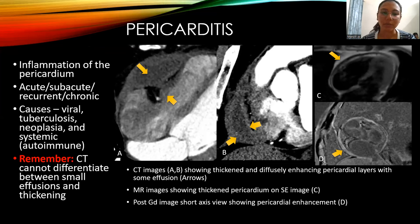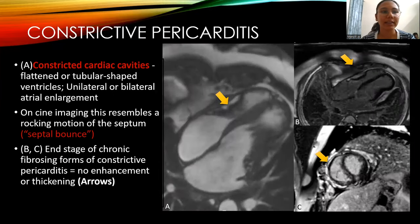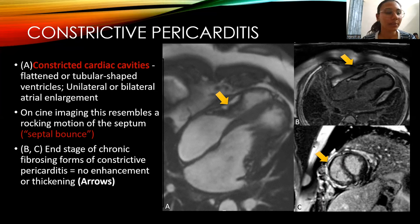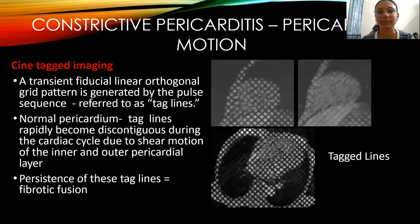On spin echo images and post-gadolinium short axis view, pericardial enhancement is demonstrated. In constrictive pericarditis, image A shows constricted cardiac cavities with flattened or tubular-shaped ventricles and unilateral or bilateral atrial enlargement. On cine imaging, this resembles a rocking motion of the septum, also known as septal bounce. Images B and C show the end stage of chronic fibrosing constrictive pericarditis with no enhancement or thickening.